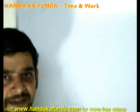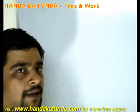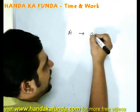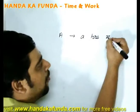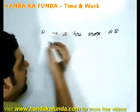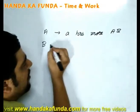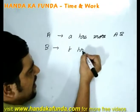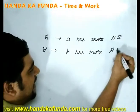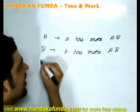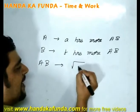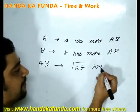Let us take a slightly different case now. Suppose A does some amount of work in A hours more than A and B combined, and B does the same amount of work in B hours more than A and B combined. Then A and B combined will take the square root of AB hours.